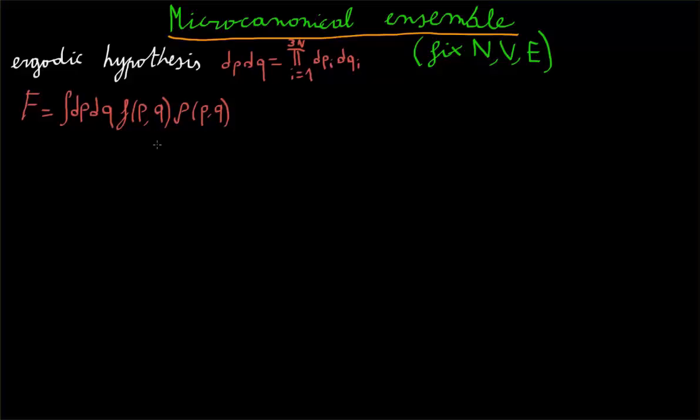We can think of justifying this by thinking that instead of having one system, we have an infinite collection of systems which can randomly be in any of these points of the phase space. And then, rho will give us the probability of a system being in any of these states.